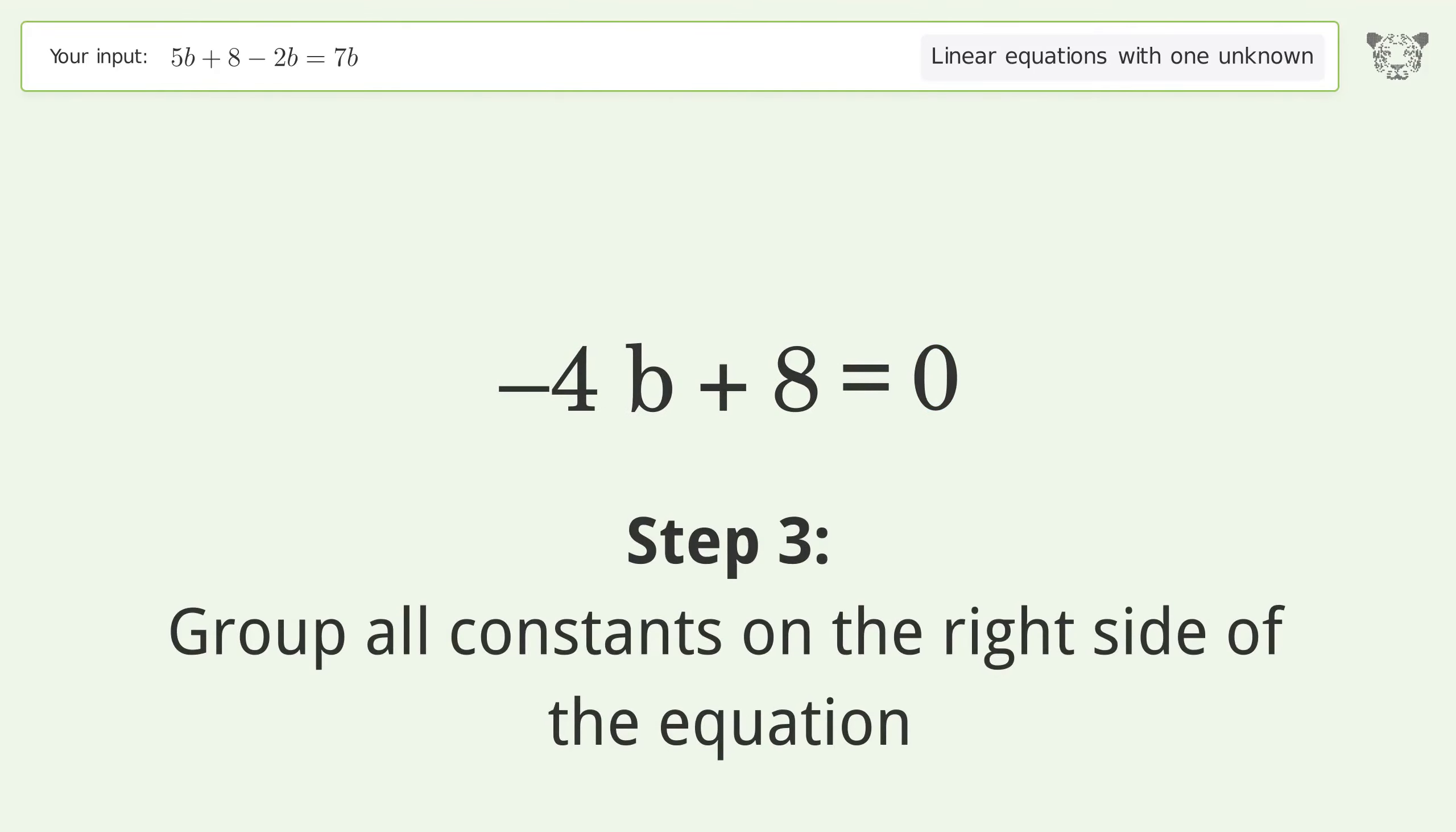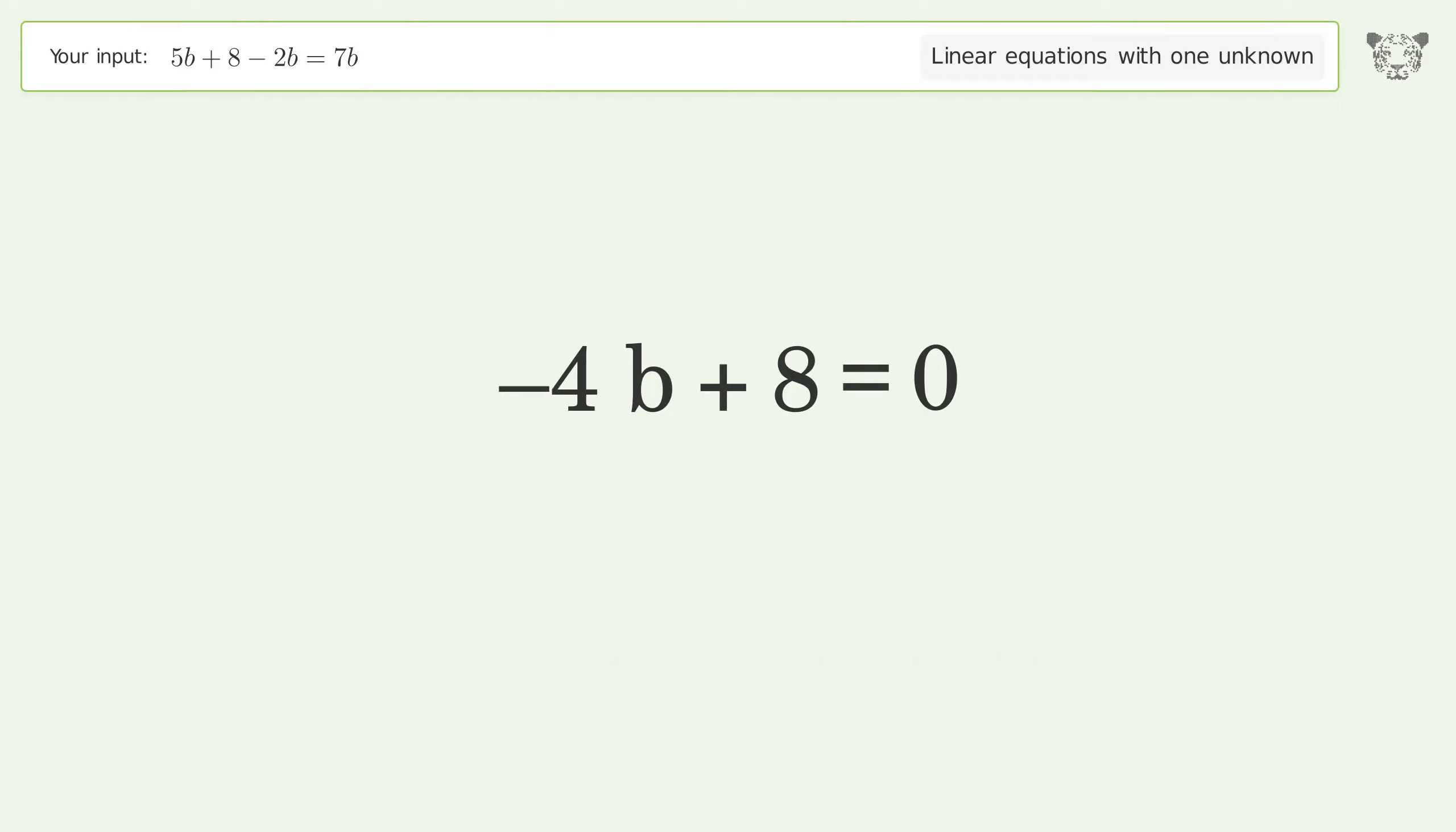Group all constants on the right side of the equation. Subtract 8 from both sides. Simplify the arithmetic.